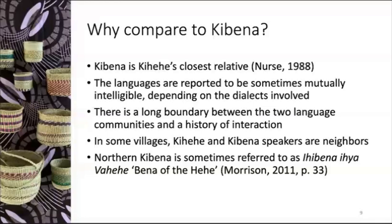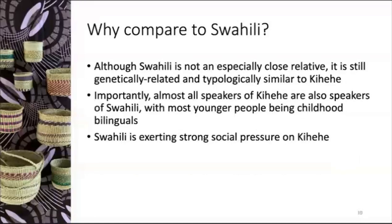There is also northern Kibena, sometimes referred to as Ihibena yeha vahehe — 'Bena of the Hehe' — which is an interesting ideological fact and may suggest contact along that language border. As for Swahili: it is not an especially close relative but is genetically related and has typological similarity. Importantly, almost all speakers of Kihehe are also speakers of Swahili, with most being childhood bilinguals. Swahili is exerting strong social pressure on Kihehe, so there is an expectation that we would see some contact effects.